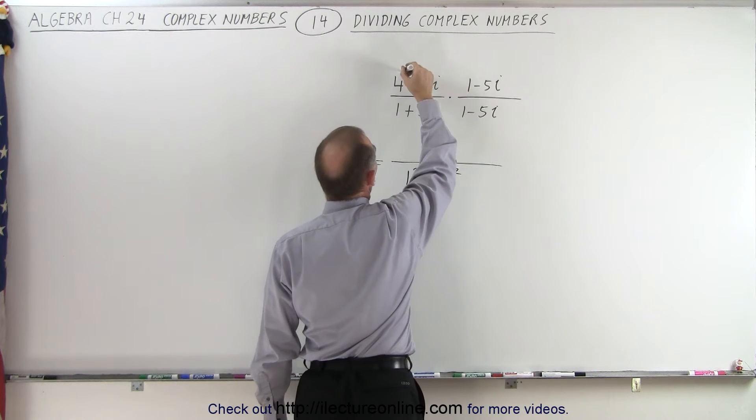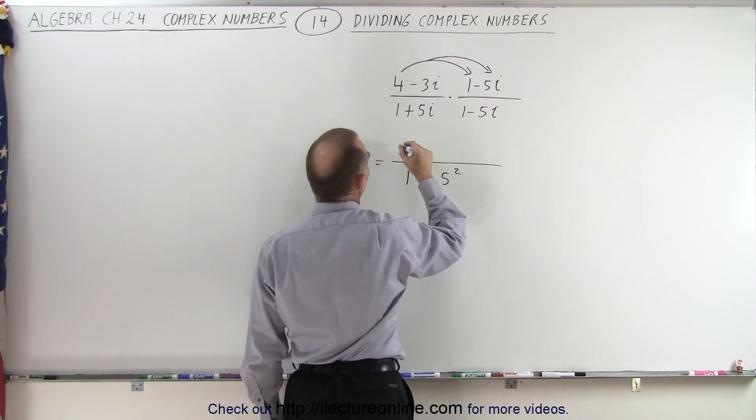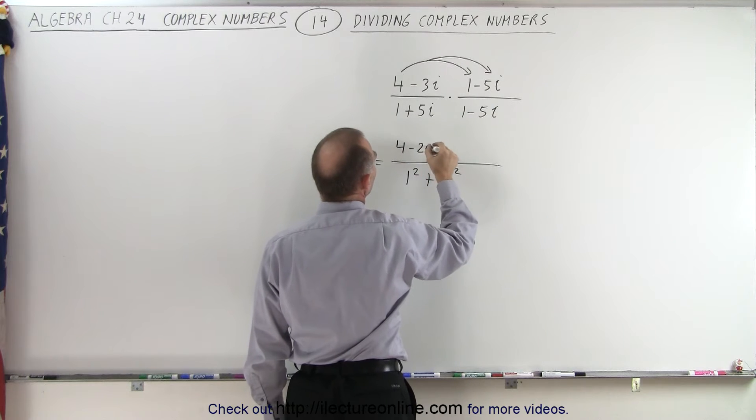In the numerator we're going to have to multiply the 4 times the 1 and the 4 times the negative 5i. So we get 4 minus 20i.